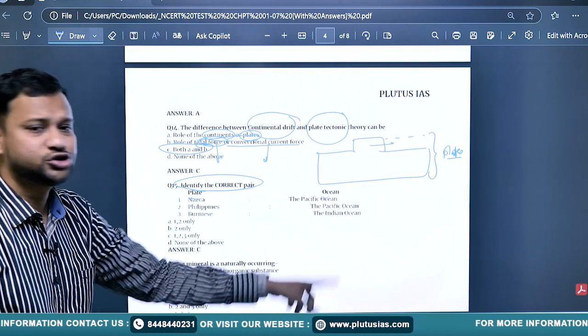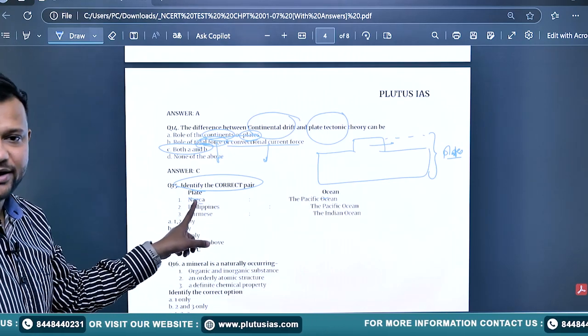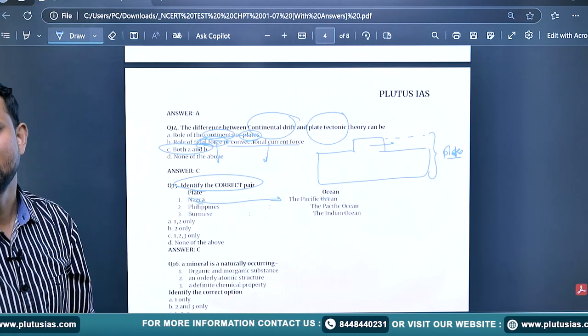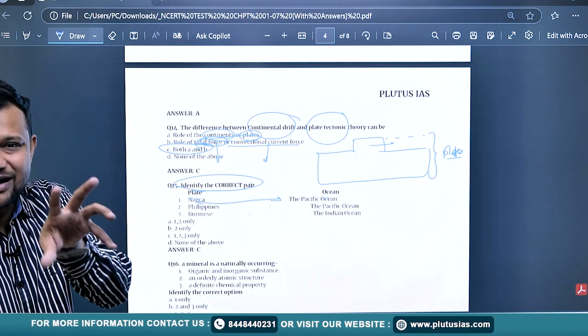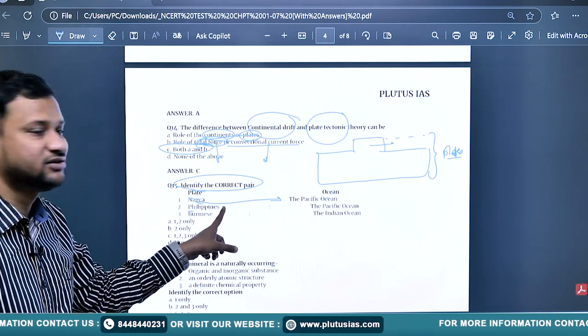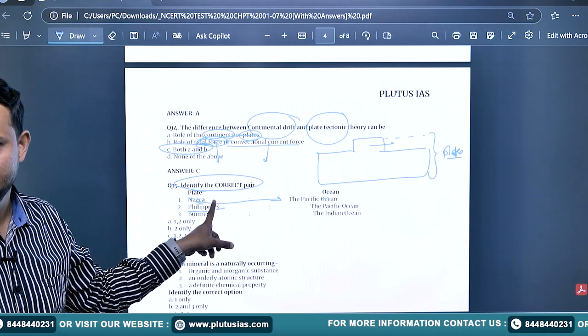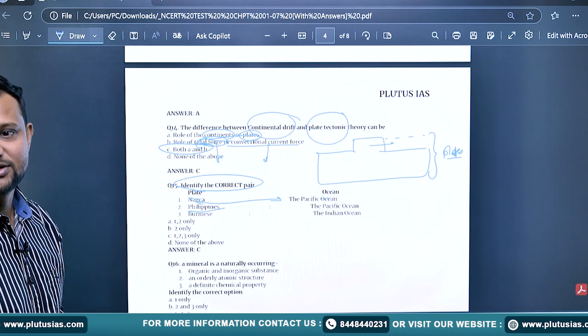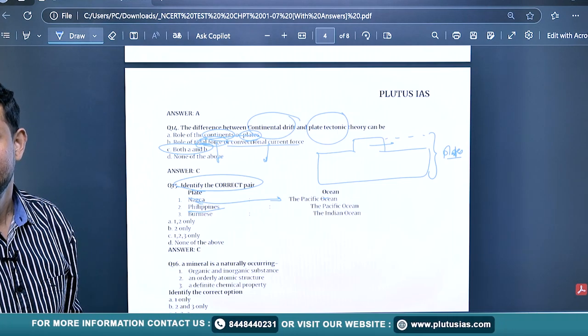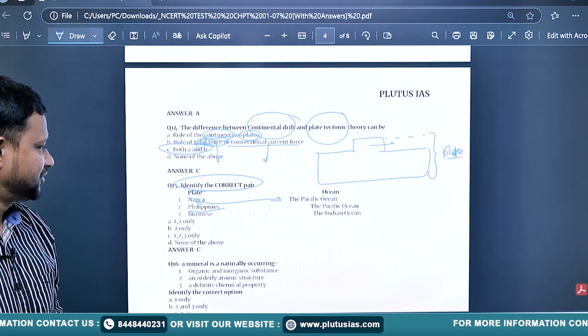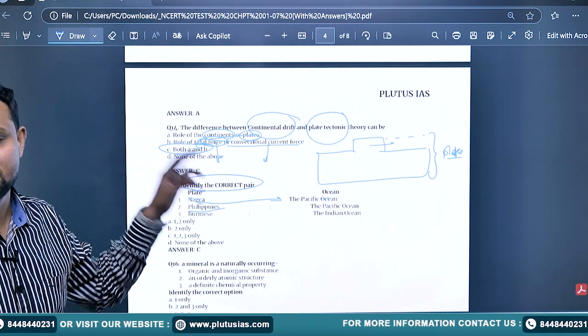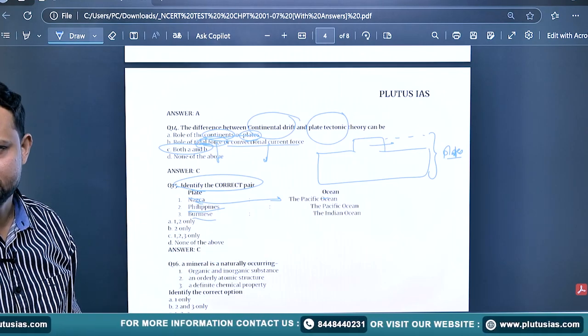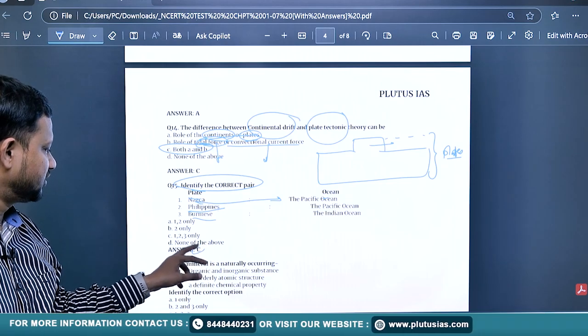Identify the correct pair of plates and ocean in which they are lying. Nasca plate - where is it? Pacific Ocean. Nasca plate lies south of American coast, central American west side. Philippine plate - the largest plate in the Pacific Ocean. Burmese plate is in the Indian Ocean near Myanmar. Answer is one, two, and three - all are correct.